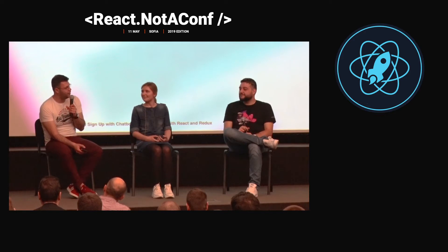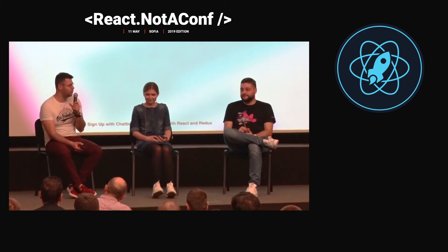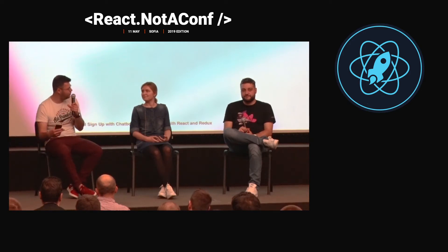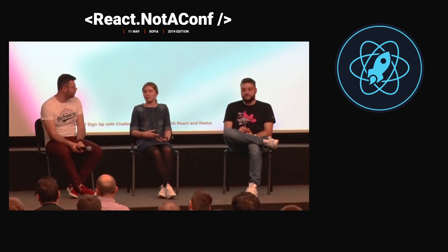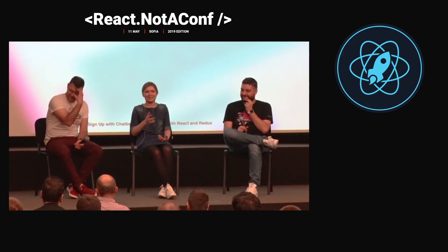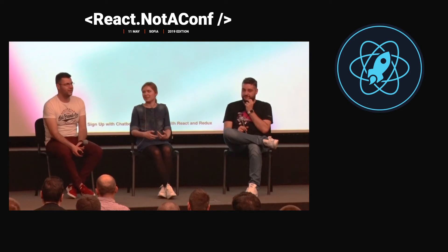Do you remember how you started writing and implementing the application — did you start from the components or from the actions? Personally I prefer to start by sketching the actions, then continue with the reducer. Some colleagues prefer to start with the UI first and then add the logic. I also prefer to start with the actions and dispatch to the reducer. The first thing I actually implemented was a delay trigger, just to see that the message changes — moving to the next state, to the next message.